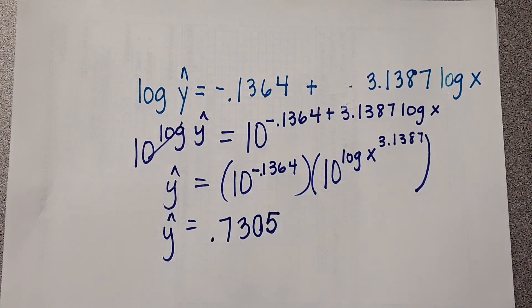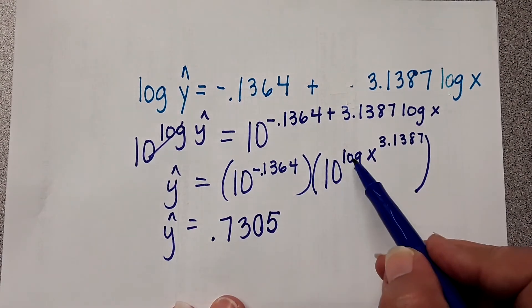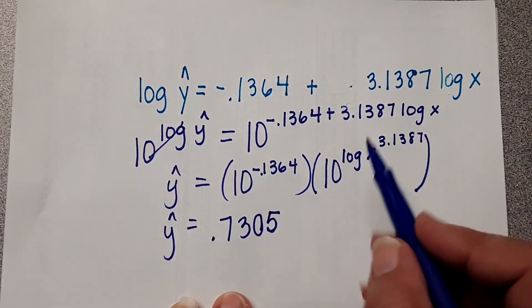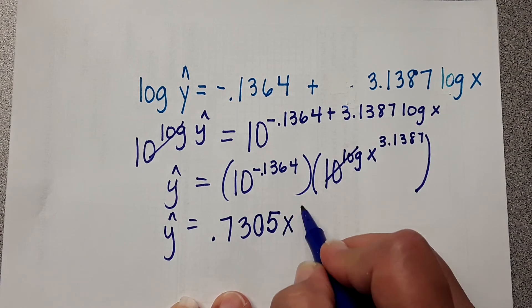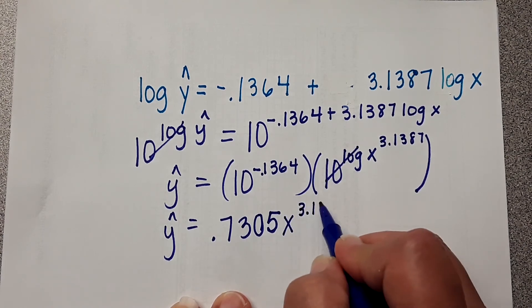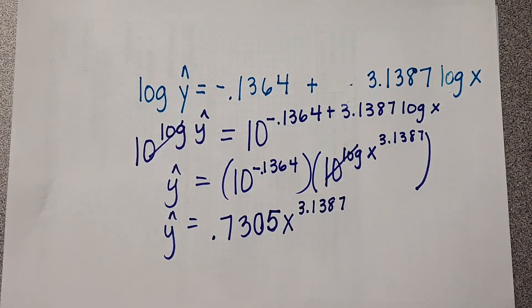We rounded a lot — I rounded in the equation and now I'm rounding again. Remember, we are going to have some round-off error. You see this 10 in this log — they cancel out. And then you're left with x raised to the 3.1387. And that is your transformed equation.